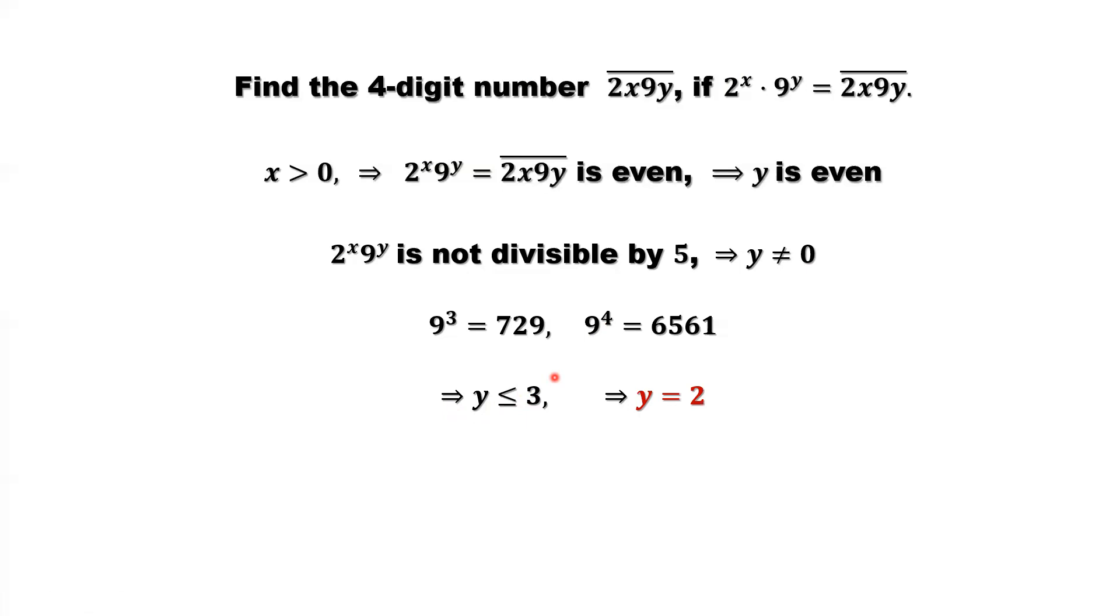Combining three conditions: y is even, y is not 0, y less than or equal to 3. This implies y equals 2, y must be 2.